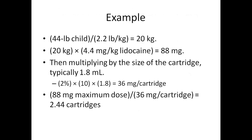Here is an example: a child weighing 44 pounds, which converts to 20 kg. This 20 kg is multiplied by the maximum recommended dose of 4.4 mg per kg of lidocaine, which comes out to be 88 mg. This is then multiplied with the concentration of 2% and by 10, giving 36 mg per cartridge. The 88 mg maximum dose is then divided by 36 mg per cartridge, which comes out to be 2.44 cartridges.